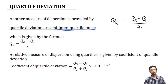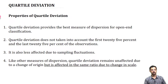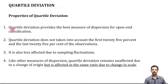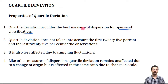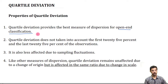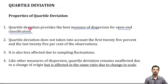Let us discuss some properties of quartile deviation. The first property says that quartile deviation provides the best measure of dispersion when we have open-ended classification. It is similar to finding the median, which is also suitable for open-ended classification. The best measure of dispersion for open-ended classes would be quartile deviation.